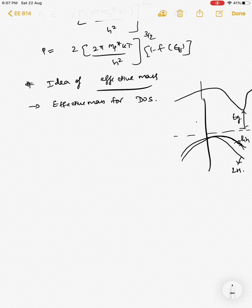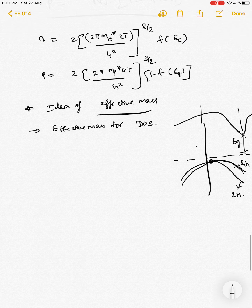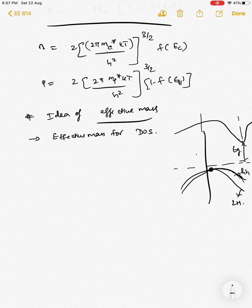Silicon actually has six equivalent conduction band minima (dips) which are equally close to the valence band top. I'm drawing a simple 2D plot, but in the actual 3D picture there are six such dips. All the density of states calculations we have done should therefore be multiplied by six, because each minimum is equally probable to be filled.